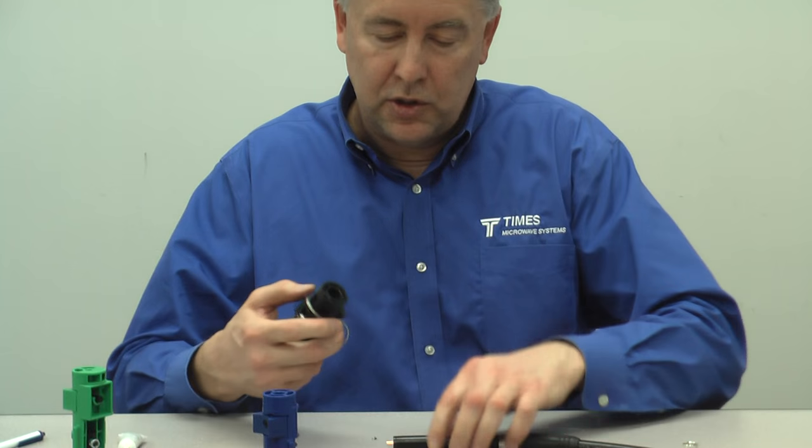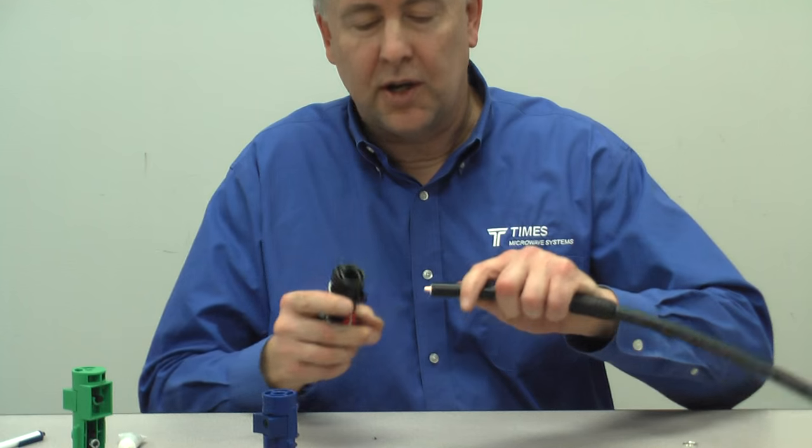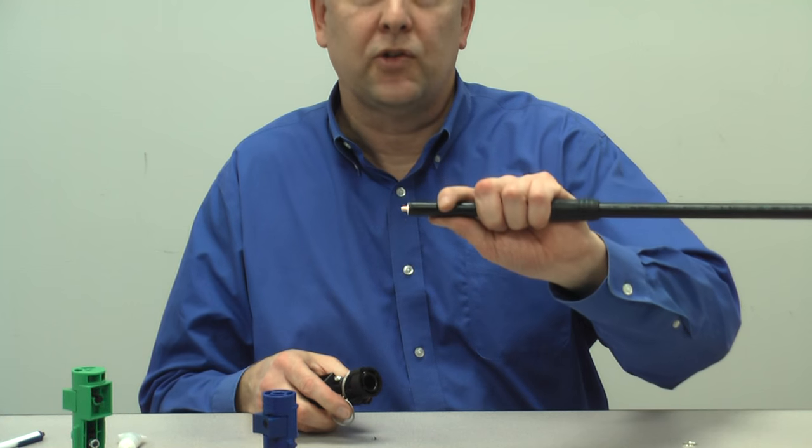You flip the tool around. There's a deburring tool. Just a little back and forth. You take it and you got a nice chamfer there in the center conductor.